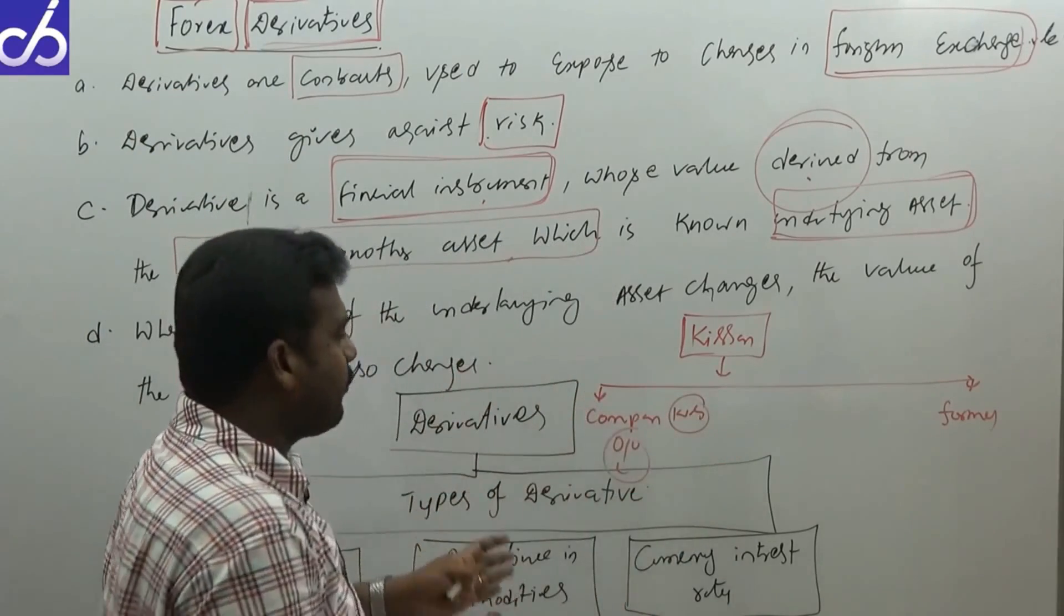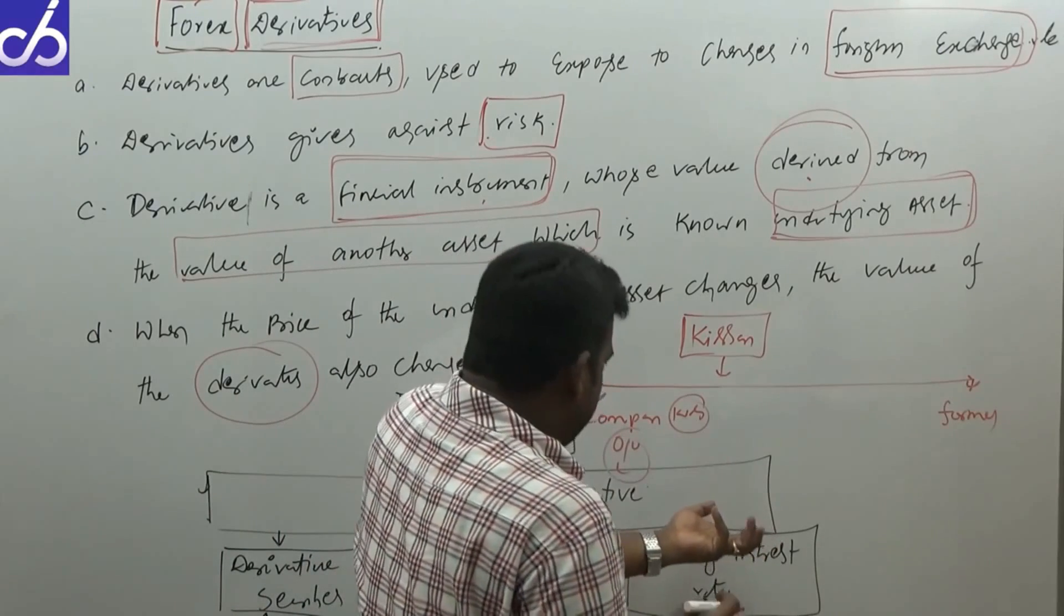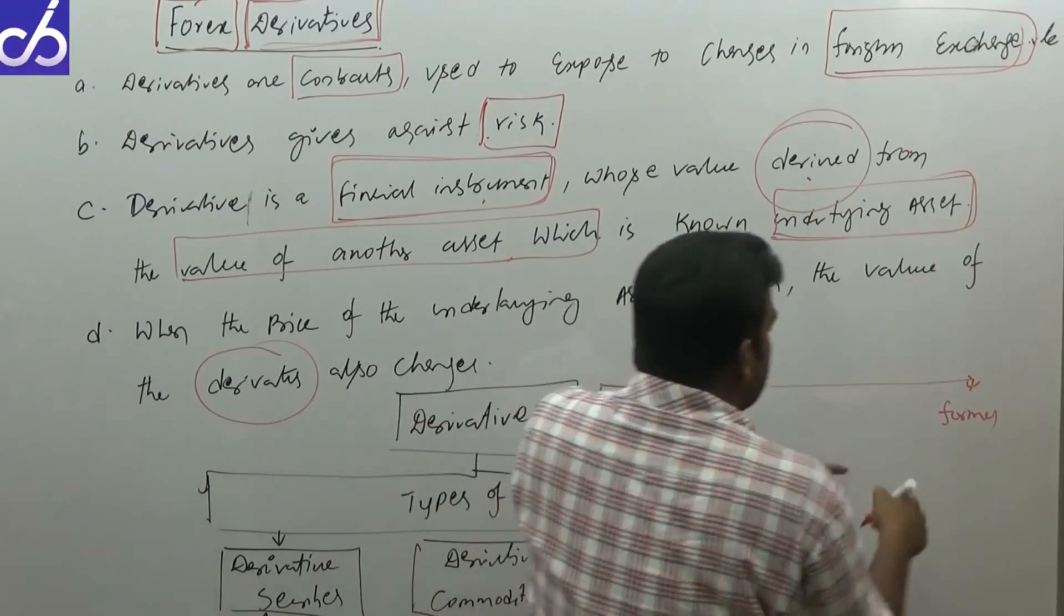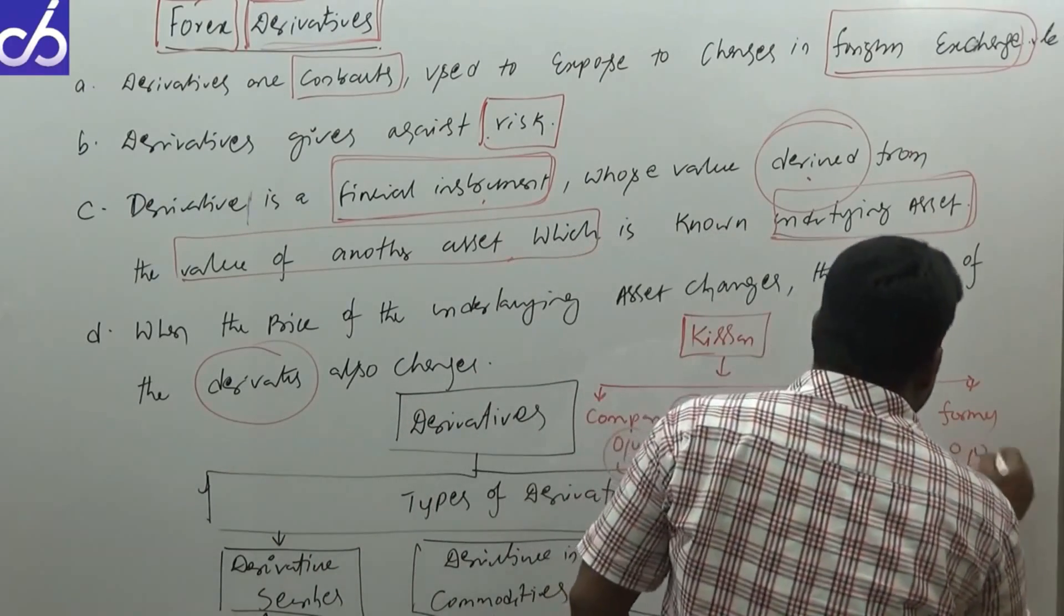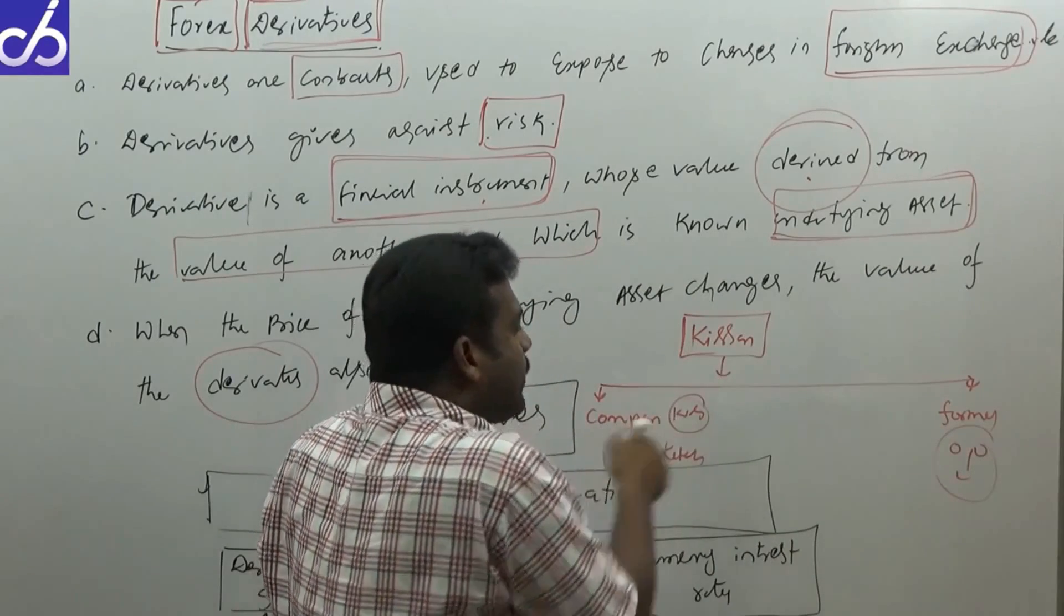Kissan company produces tomato ketchup, but this product needs tomatoes produced by the farmer. The farmer produces tomatoes and Kissan company produces tomato ketchup.